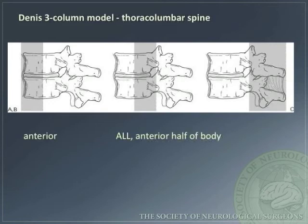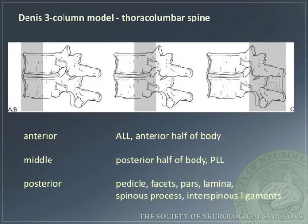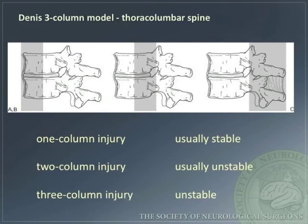The first (anterior) column includes the ALL and anterior half of the vertebral body. The second (middle) column includes the posterior half of the vertebral body and PLL. The third (posterior) column includes the pedicle, facets, pars, lamina, spinous process, and interspinous ligaments. According to this model, one-column injury is usually stable, two-column injury is usually unstable, and three-column injury is unstable.